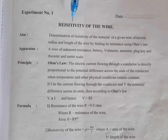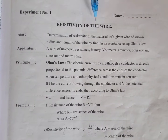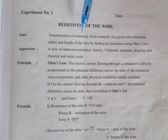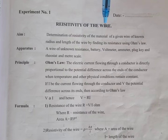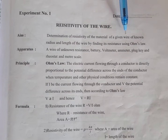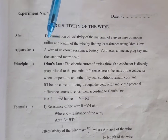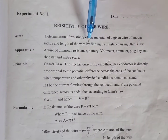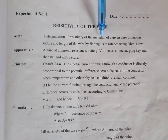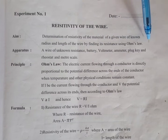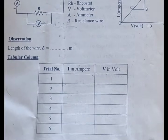Experiment number 1: resistivity of the wire. Let us determine the resistivity of the material of a given wire of known radius and length by finding its resistance using Ohm's law.